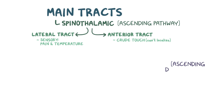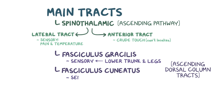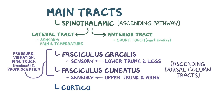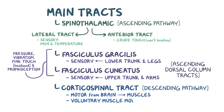Second, there are two ascending dorsal column tracts: the fasciculus gracilis, which carries sensory information from the lower trunk and legs, and the fasciculus cuneatus, which carries sensory information from the upper trunk and arms. These tracts both carry sensations like pressure, vibration, fine touch — where you can localize where you were touched — and proprioception, which is an awareness of your body position in space. Finally, there's the corticospinal tract, a descending pathway that carries motor information from the brain to different muscles in the body and controls voluntary muscle movement.